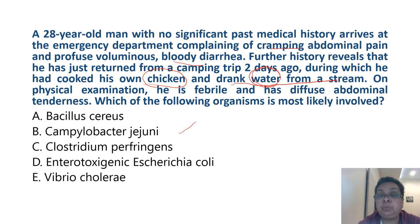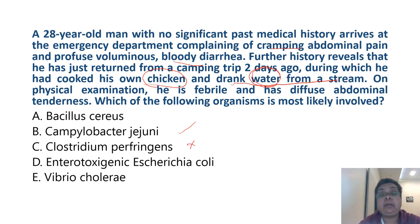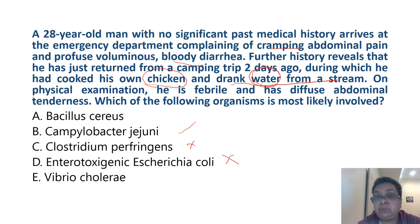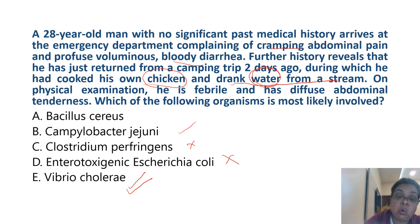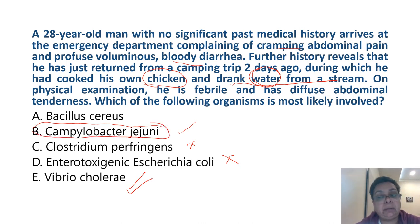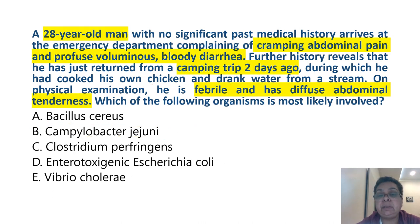Clostridium perfringens also produces an enterotoxin — again, no blood and mucus in stools in that food poisoning, so ruled out. Enterotoxigenic E. coli secretes labile and stable toxins causing watery diarrhea. Vibrio cholerae produces rice-water stools — never blood-tinged — it's a cholera toxin-mediated diarrhea. This is a simple question because all the others are toxin-mediated diarrheas. Our answer is Campylobacter jejuni — invasive diarrhea due to Campylobacter jejuni.